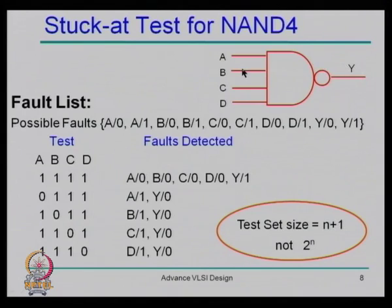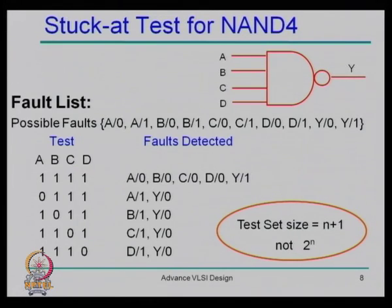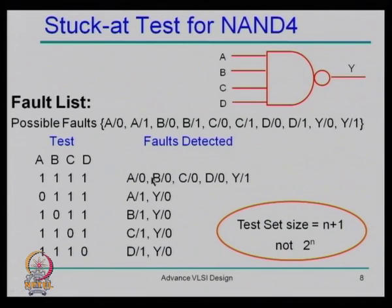If B is stuck-at-0, applying 1-1-1-1 again produces output 1, giving distinguishable faulty and fault-free behavior. Similarly, C stuck-at-0 and D stuck-at-0 can also be detected. For the output: if Y is stuck-at-1 and we apply 1-1-1-1, the output is 1 instead of the expected 0 — distinguishable. The vector 0-1-1-1 detects A stuck-at-1: since A is permanently stuck to 1, the output is 0, whereas the fault-free output would be 1.